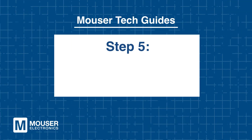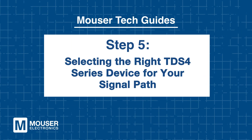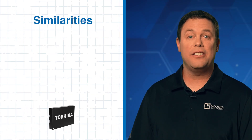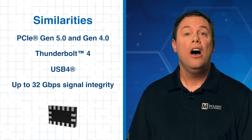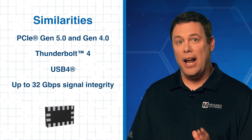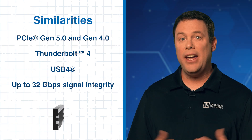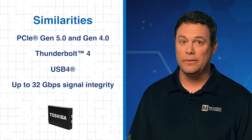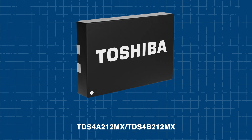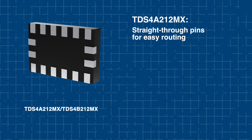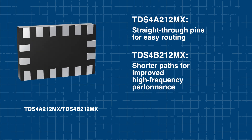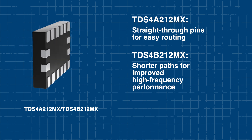Step 5: Selecting the right TDS4 series device for your signal path. The TDS4A and B switches support high-speed protocols and are designed for signal integrity of up to 32 gigabits per second. While their electrical performance is similar, they differ in pinout and internal signal routing. The TDS4A uses a straight-through pinout, making it ideal for simple PCB routing and general-purpose system layouts. In contrast, the TDS4B uses shorter internal traces to reduce impedance, enhancing performance at higher frequencies.